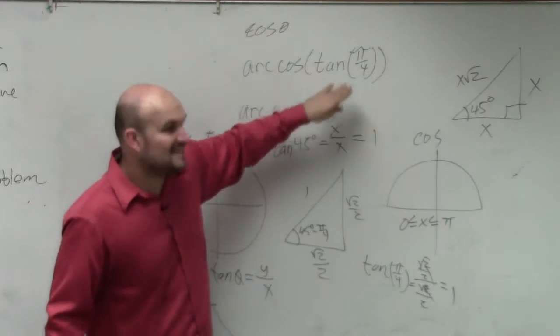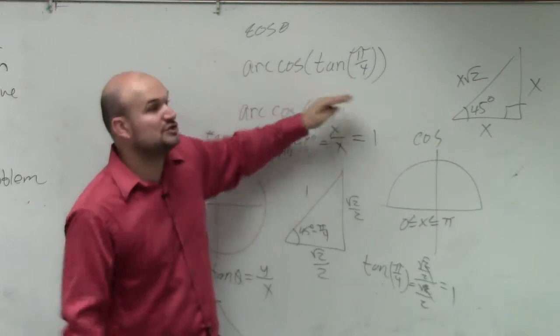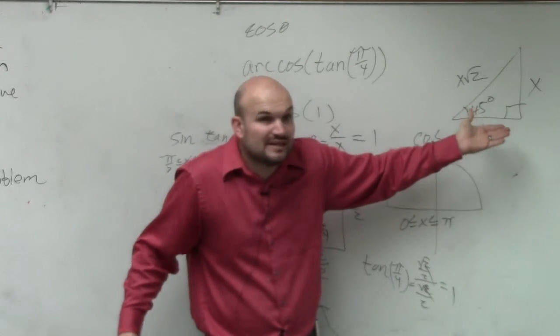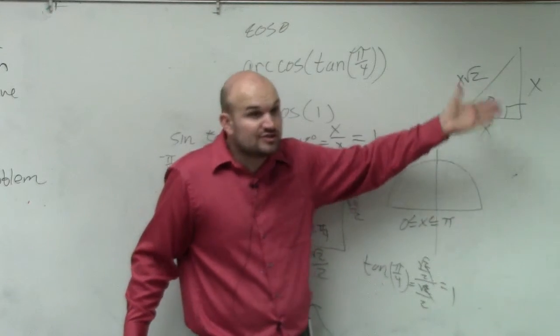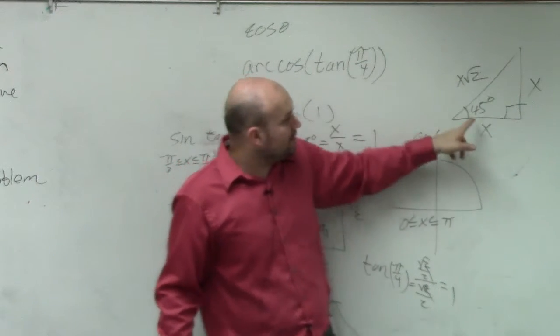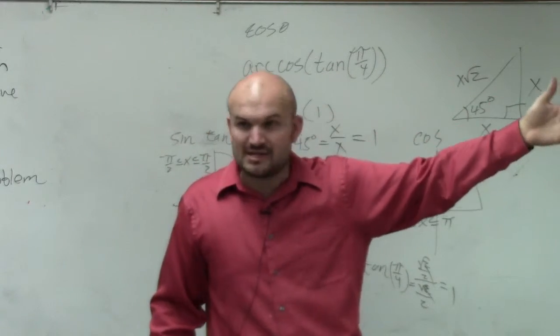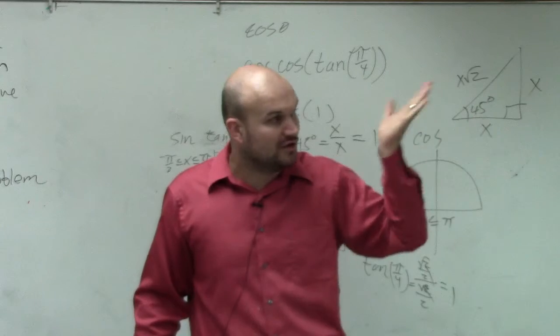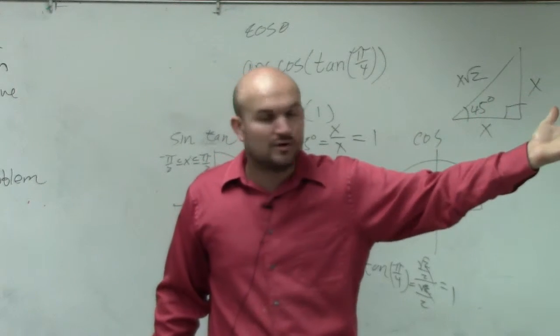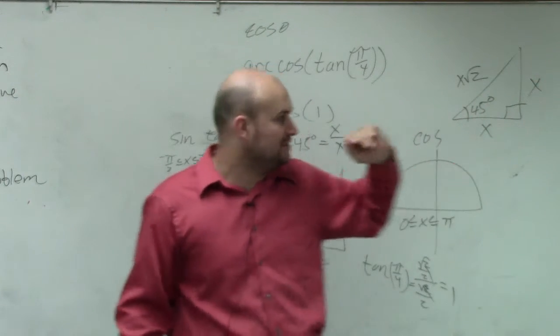So the tangent of your angle is your opposite over your adjacent. So create a triangle if you need to, right? If you don't know what to do, just create your own triangle. Figure out, what is the tangent? However, I want you guys to start making that transition to understanding the unit circle, understanding how those special right triangles are on the unit circle.